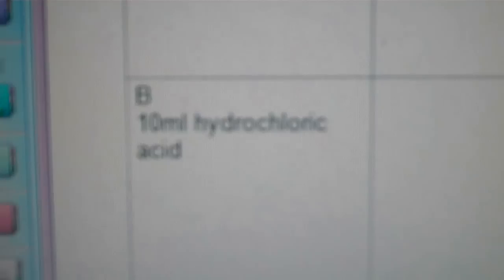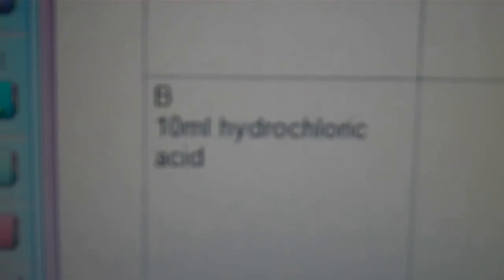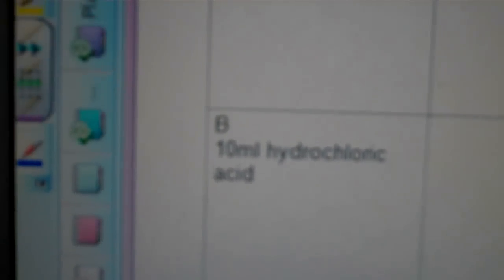In test tube B, we're going to put acid, this is hydrochloric acid that's normally found in the stomach. And in test tube C, so test tube B will also have three pieces of egg white.